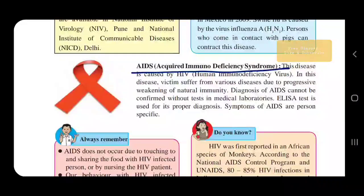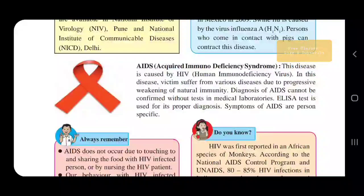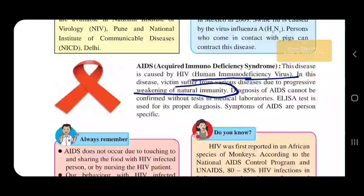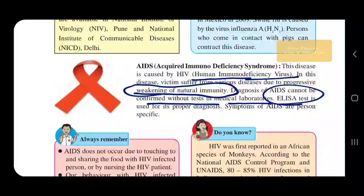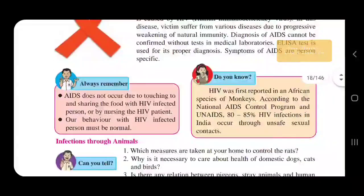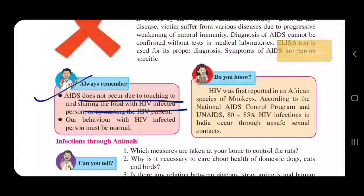Next we have Acquired Immunodeficiency Syndrome, known as AIDS, caused by HIV — the Human Immunodeficiency Virus. Victims suffer from various diseases due to progressive weakening of natural immunity. Diagnosis of AIDS cannot be confirmed without testing in a medical laboratory. The government of India and many other institutes have developed the ELISA test for this purpose. Remember, AIDS does not occur due to touching or sharing food with an HIV-infected person, so our behavior with such patients must be normal.